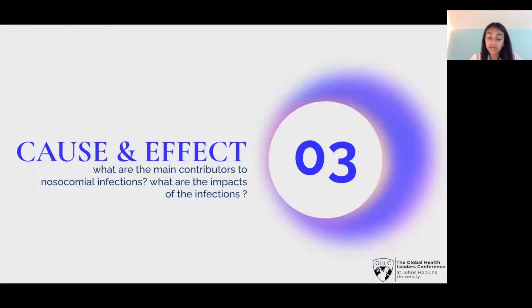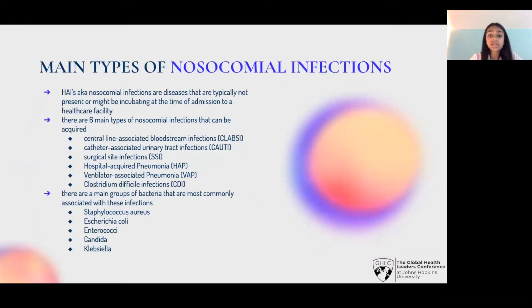Moving into cause and effect — what are the main contributors and impacts of these infections? There are six main types of nosocomial infections: central line-associated bloodstream infections, catheter-associated urinary tract infections, surgical site infections, hospital-acquired pneumonia, ventilator-associated pneumonia, and CDIs. There are also a few groups of bacteria most commonly associated with these infections, listed on the slide.